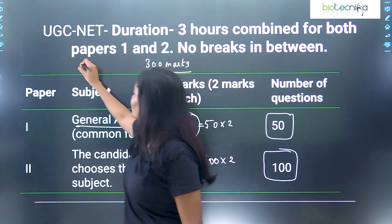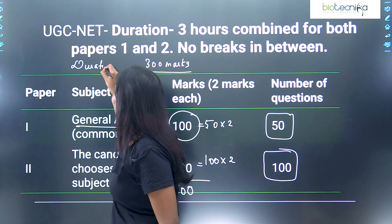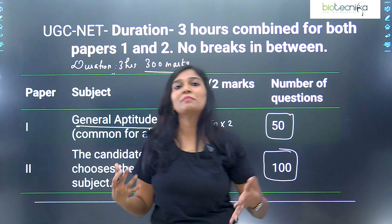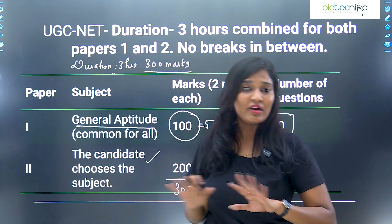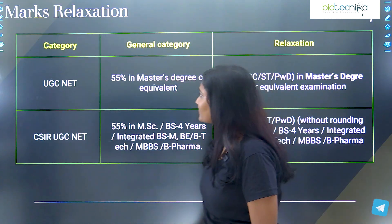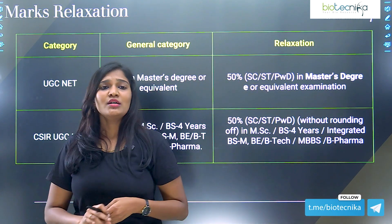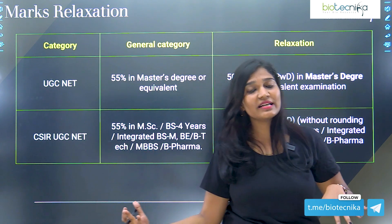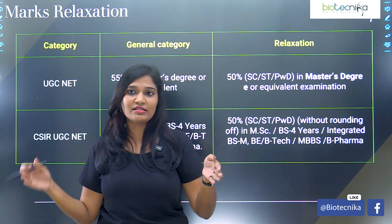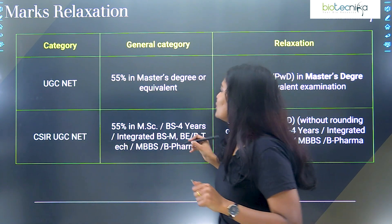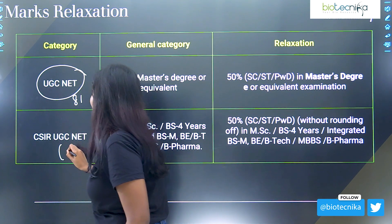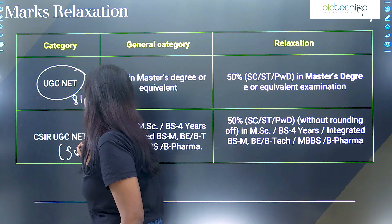There is no break between Paper 1 and Paper 2 in UGC NET. Regarding marks relaxation: if you want to apply for either CSIR NET or UGC NET, you need a minimum marks in your master's degree or bachelor's degree. For UGC NET covering 81 subjects and for CSIR NET covering 5 science subjects, general category or EWS candidates need 55% marks in their master's degree. The same applies for MSc or BS four-year degree, or integrated BS/MS, BE, MBBS, or B Pharma.